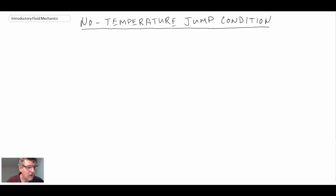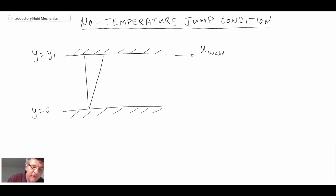Another condition we have is for non-isothermal flows, what we refer to as the no-temperature jump condition. This would be an application perhaps in heat transfer. We'll draw out the two planes again just like we did before. We have our upper wall, our lower wall, and let's assume that the upper wall is moving. We have our velocity profile as before.